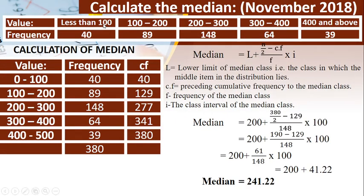Here, it is less than 100. 100 to 200, 200 to 300, 300 to 400, 400 and above. So we are closing the first class and the last class. Frequency is there. Cumulative frequency will be taken and we proceed. We take n by 2 which is 190. Mark the arrow. Take it down. L is 200 plus n by 2 minus CF which is 129 by F which is 148 into the class size which is 100 and the median is 241.22.